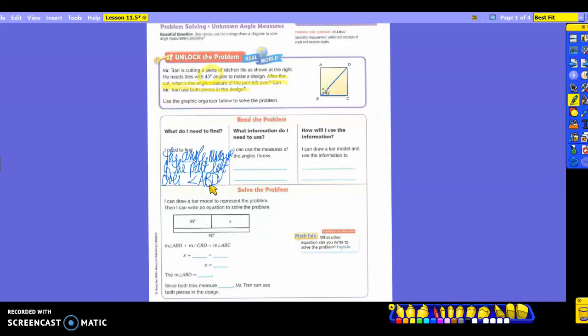In this case, it does have to be ABD, because if you look, that's the angle we're going to measure there. Now if you look, the center is asking us what information do I need to use? It tells us that we can use the measures of the angles that I know. So they gave us what angle? That is angle DBC, or you could say CBD, it doesn't matter. I'm going to use DBC, is 45 degrees. That's the one they gave us, correct?